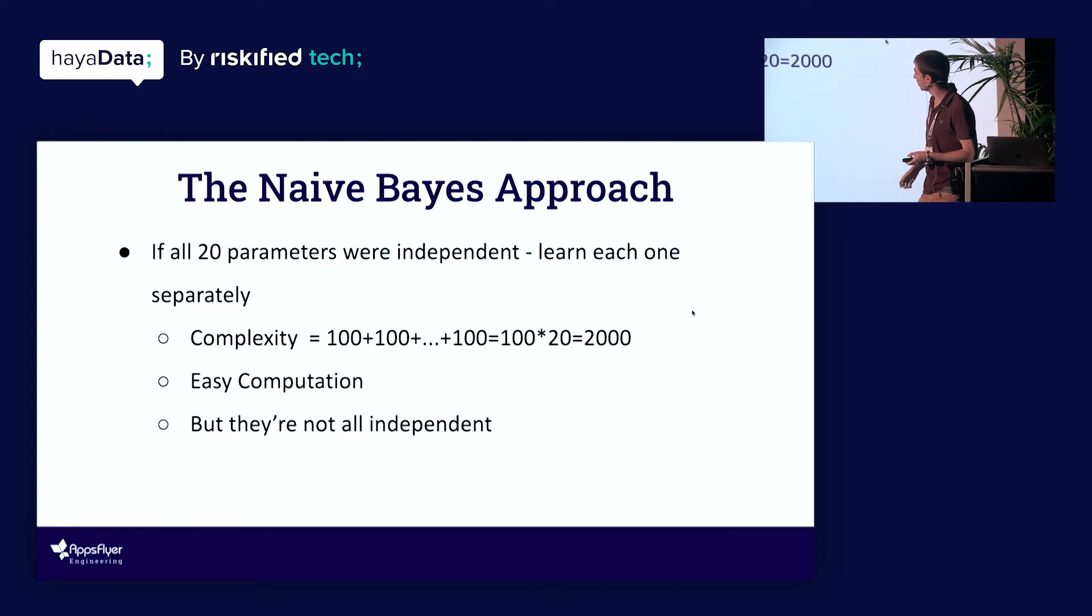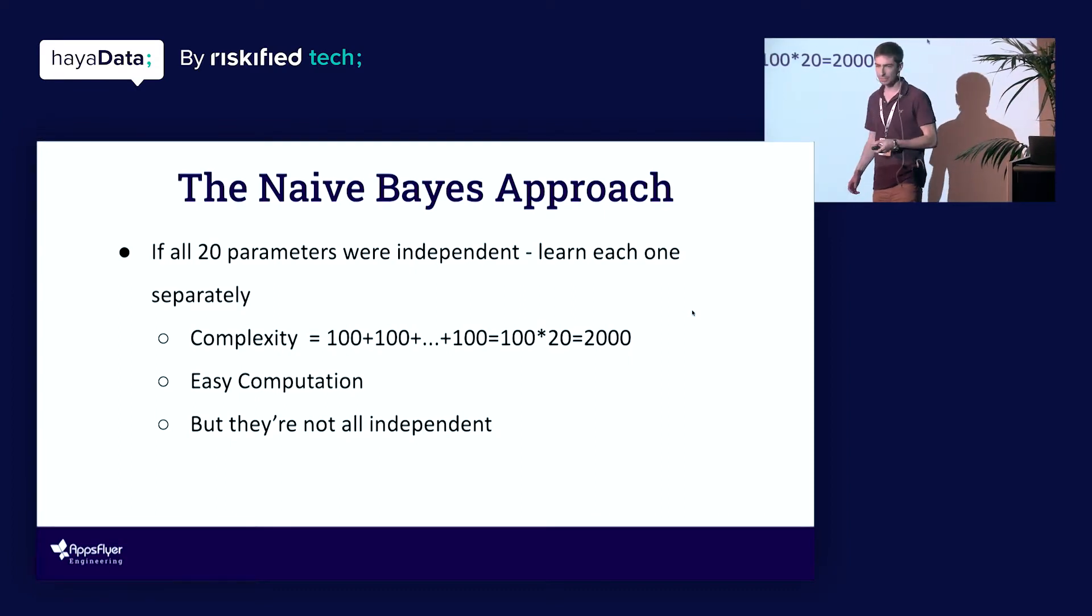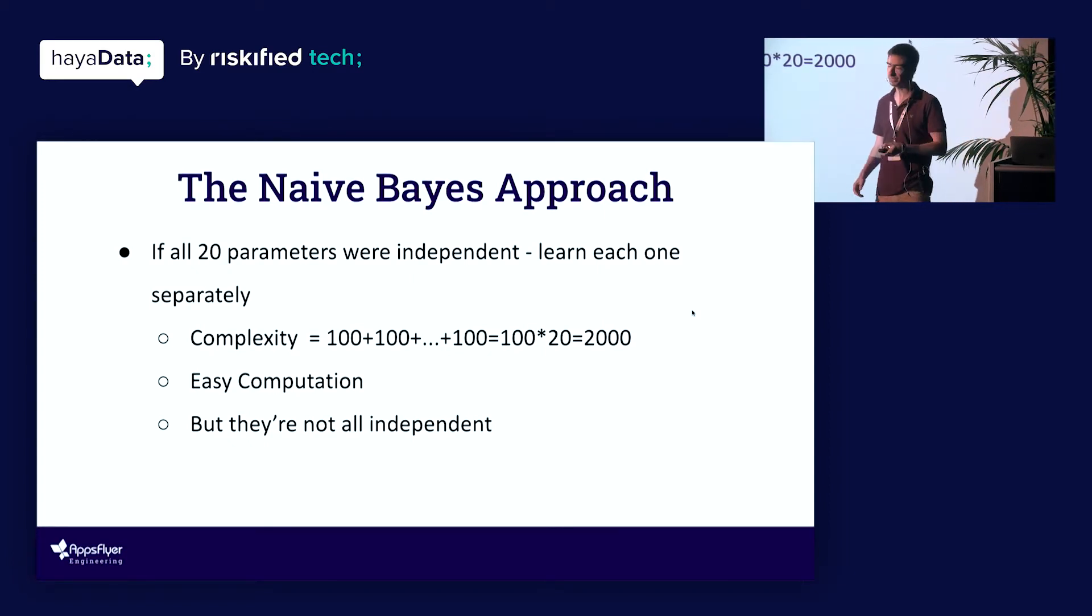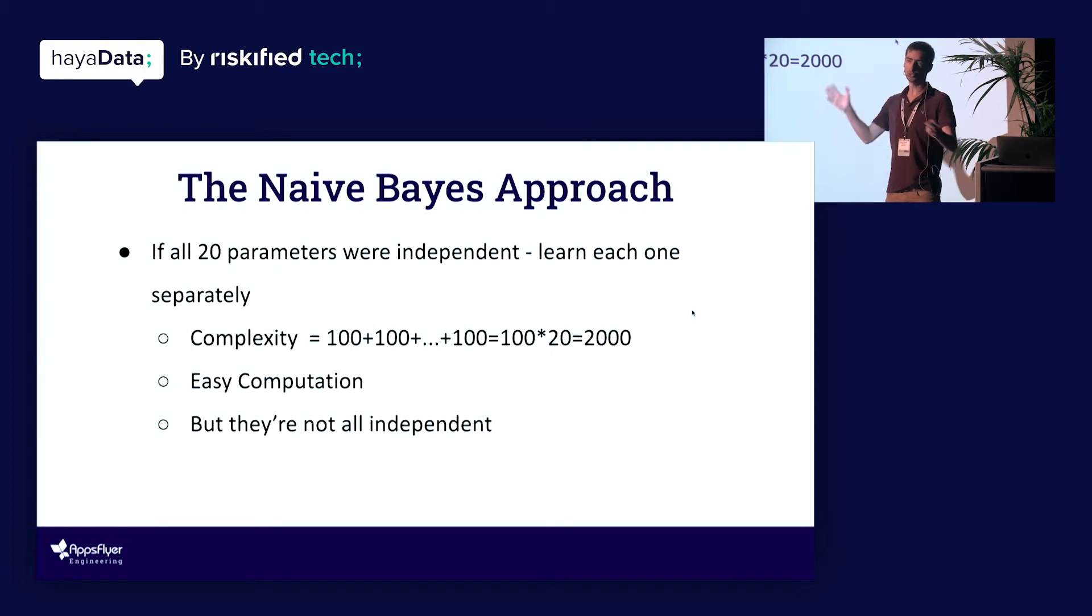So we have a couple of problems. One common approach for dealing with this is the naive Bayes approach. And the naive Bayes, essentially what it does is says, let's just assume all these 20 parameters, they're all independent. They have nothing to do with each other. And then we're going to calculate and learn sort of the probability for every one of these 20 parameters, every one of their 100 possible values, learn it separately. So we're going to get 100 options for the first variable, another 100 for the next one, etc. So we'll get 100 times 20 or 2000 options to learn. That's very easy to learn. It's an easy computation to make.